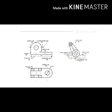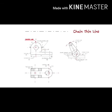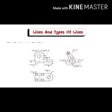Next is a dashed line, used to show hidden edges of the main object. Next is a chain thin line — long dash dotted — used to represent the center line for circles and arcs. Next is the chain thin line with thick at the ends, used to represent the location of a cutting plane.